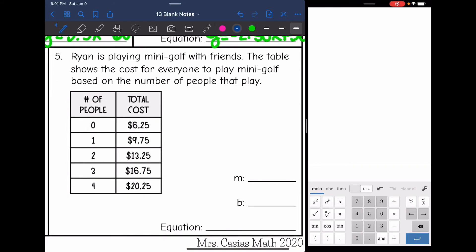Look at our last one, number 5. It says Ryan is playing mini golf with his friends. The table shows the cost for everyone to play mini golf based on the number of people that play. So I need to find the slope first. Let's use the slope formula for that. It doesn't say x and y, but the number of people is independent or our input. That's going to be x. And then the total cost is the output. That'll be our y. So this is my x1, x2, y1, and y2.